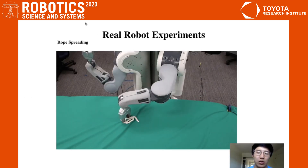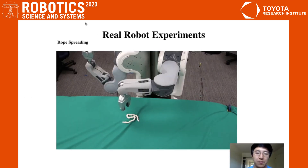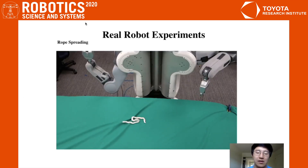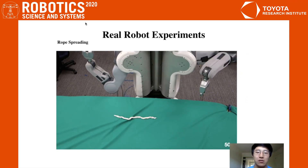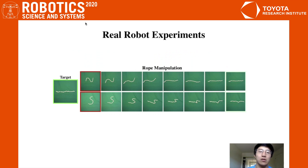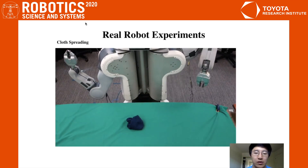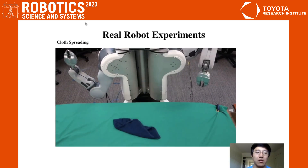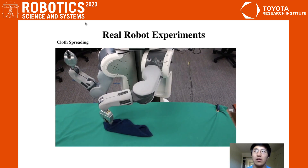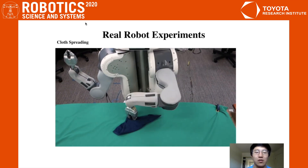Here is a trial of a rope-spread experiment, significantly sped up for the sake of time — a real trial would take about 5 to 10 minutes. Here are some examples of other trajectories, all using the same policy but given different start states. And here is a cloth-spreading trial. These typically take significantly longer, about 20 to 30 minutes, as opposed to 5 to 10 minutes for the rope.